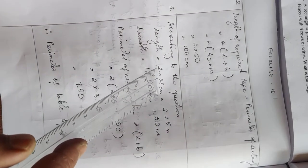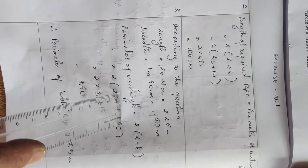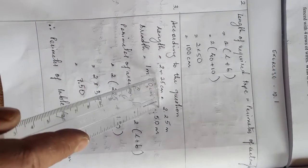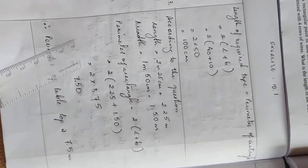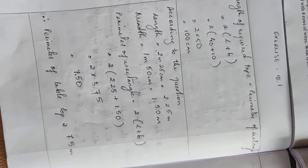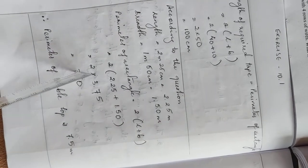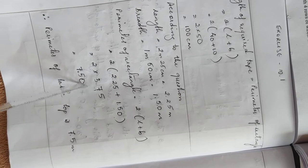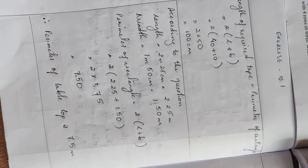After converting: length is 2.25 meters and breadth is 1.50 meters. The perimeter of a rectangle equals 2 times (L + B): 2 times (2.25 + 1.50). When we add 2.25 plus 1.50 we get 3.75, then multiply with 2 to get 7.50. After the decimal point, no need to write the trailing zero. Therefore, the perimeter of the tabletop is 7.5 meters.